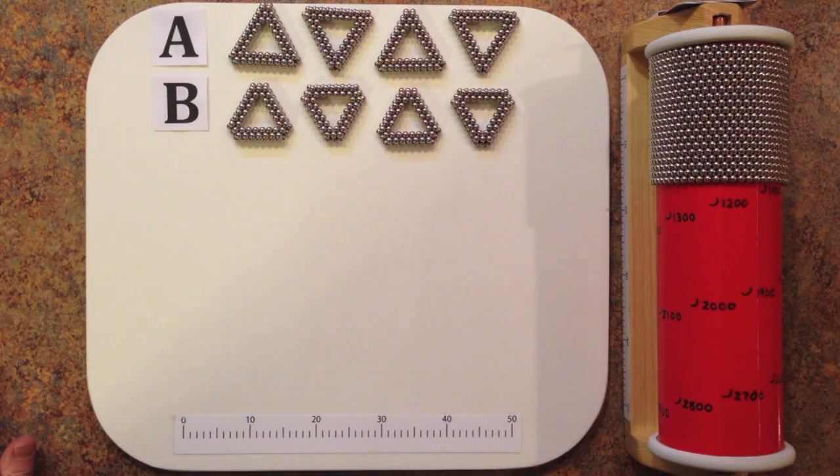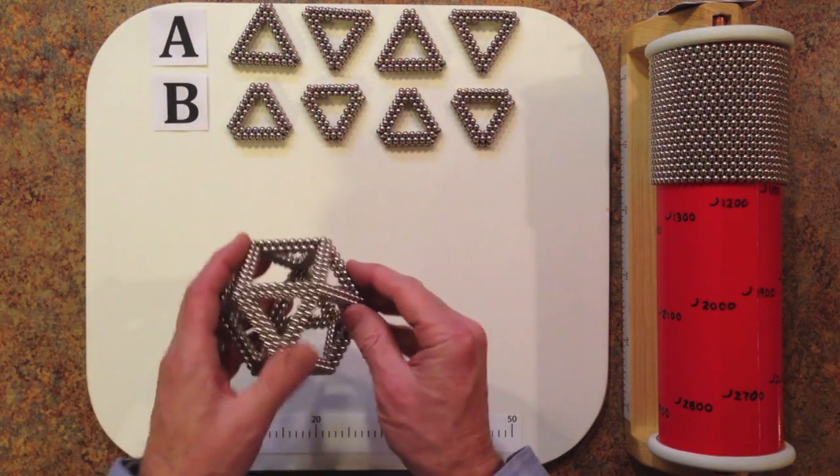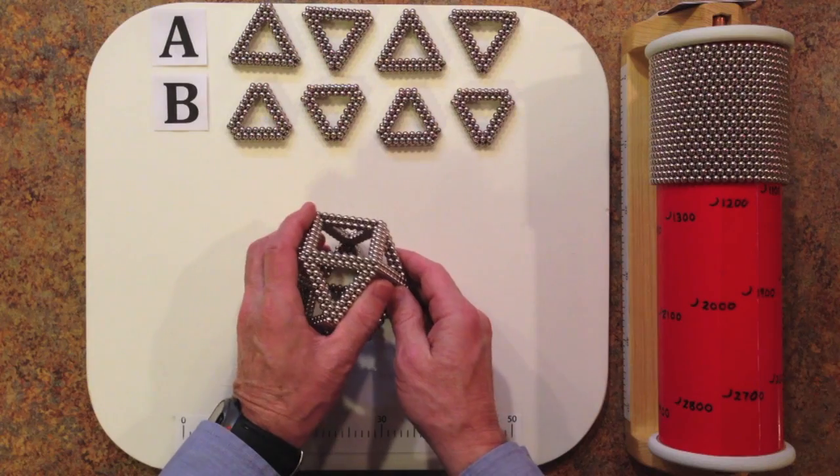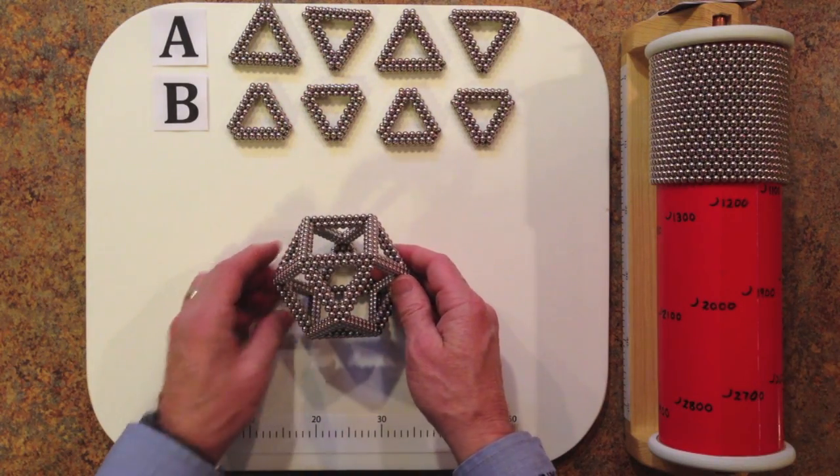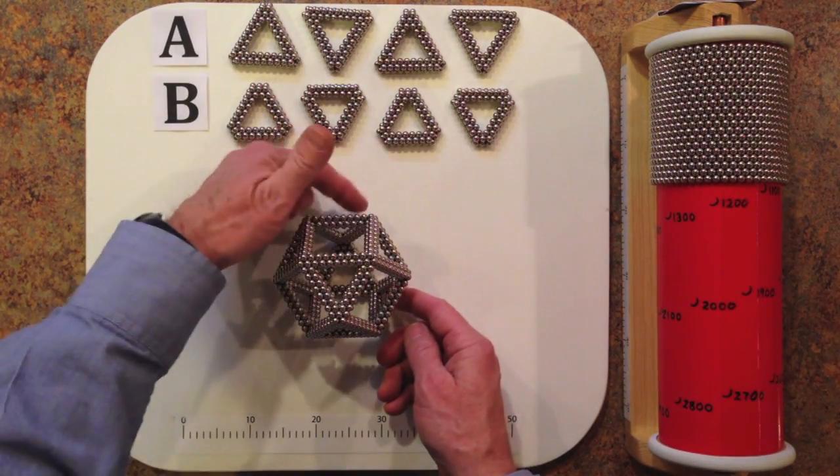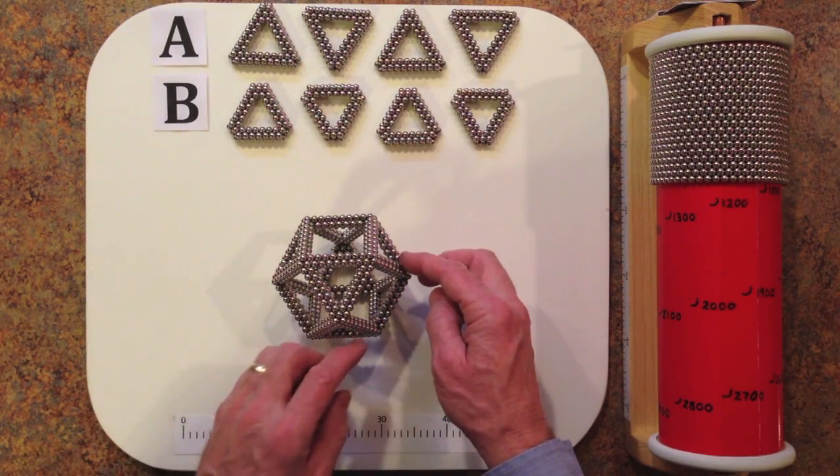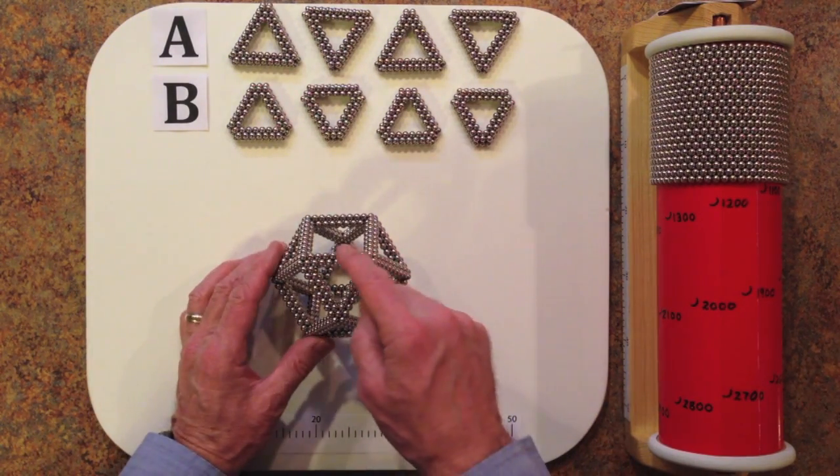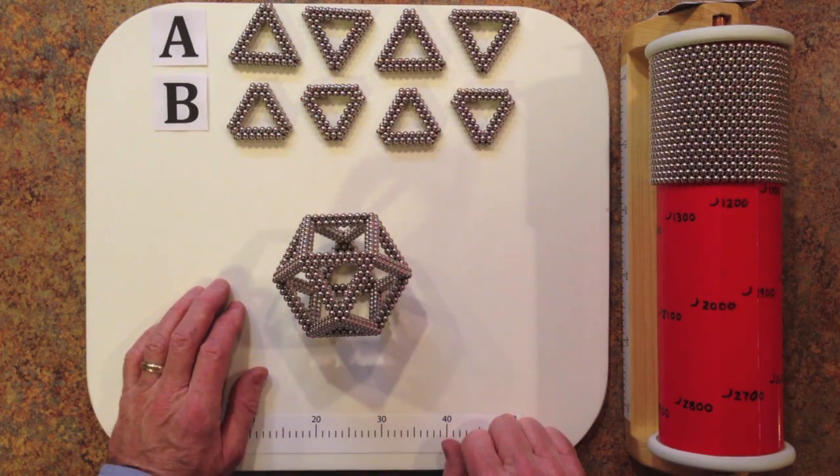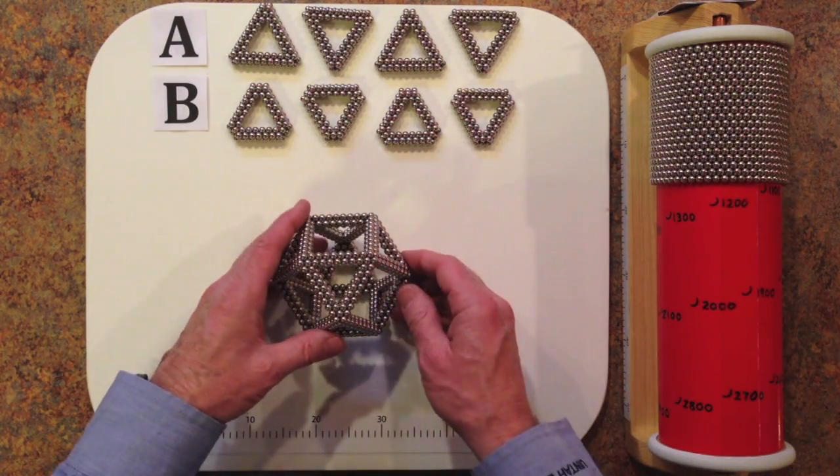The cuboctahedron is made with an A subunit on the bottom, three B subunits in the next layer up, three A subunits at the next level, and then a B subunit at the top, in the following way.